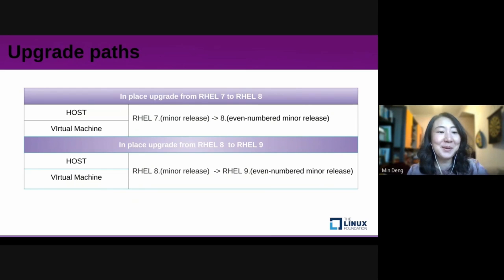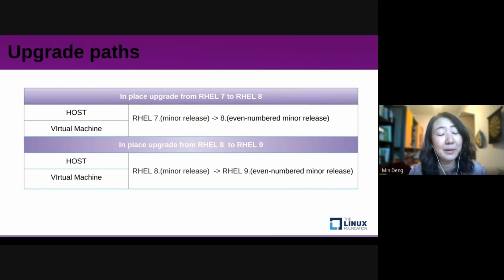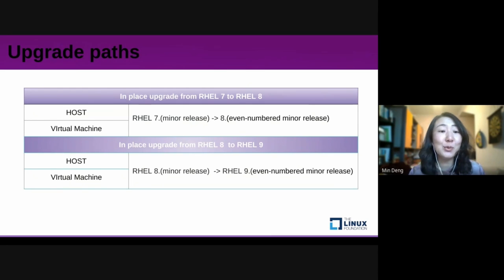Let us talk about Upgrade Paths. Currently we have two upgrade paths: from RHEL 7 to RHEL 8, and from RHEL 8 to RHEL 9. The strategy provides an Inplace Upgrade from the latest release of the source system — for example RHEL 7.9 — to the latest or even-numbered minor releases of the next major version. If you are on an early RHEL minor release, update the system to the latest minor version using yum or dnf update, and then perform the Inplace Upgrade. It is not supported to perform an Inplace Upgrade directly from RHEL 7 to RHEL 9; however, you can upgrade from RHEL 7 to RHEL 8, and then perform a second Inplace Upgrade to RHEL 9.